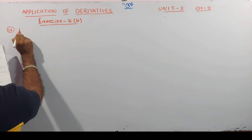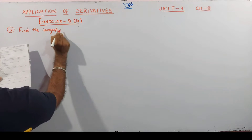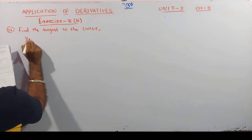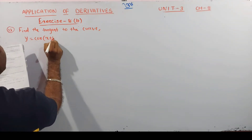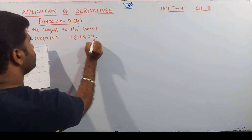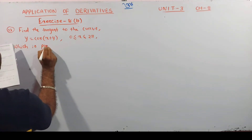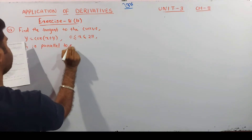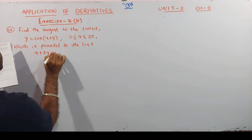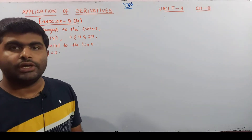Find the tangent to the curve y = cos(x + y), where 0 ≤ x ≤ 2π, which is parallel to the line x + 2y = 0.